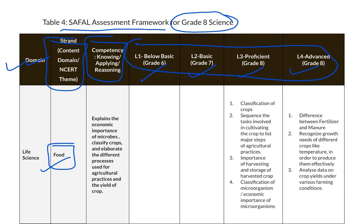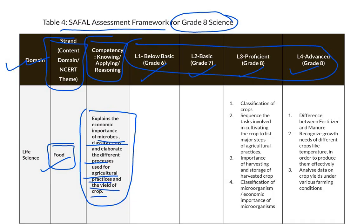The first topic is food. The competency is to explain the economic importance of microbes, classify crops, and elaborate the different processes used for agricultural practices. For proficient level, questions will be on classification of crops, sequence the tasks involved in cultivating a crop, list major steps of agricultural practices, importance of harvesting and storage of harvested crops, and classification or economic importance of microorganisms.